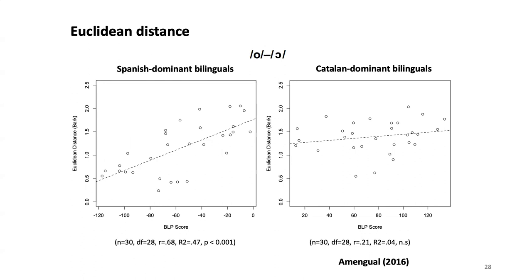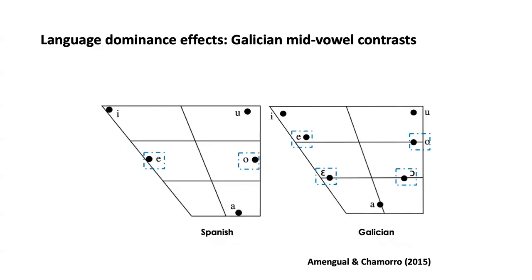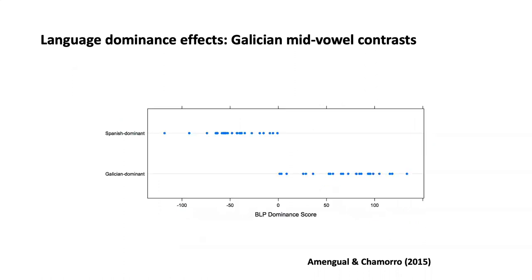Shifting to a different population but the same phonetic variable: mid vowel contrasts in Galician-Spanish bilinguals. Galician also has the mid vowel contrast that Spanish does not have. The BLP was instrumental again — not just in categorizing groups with a categorical distinction between two groups, but also as a way to look at the degree of dominance in one language or another, allowing a more fine-grained analysis taking individual participants into account.